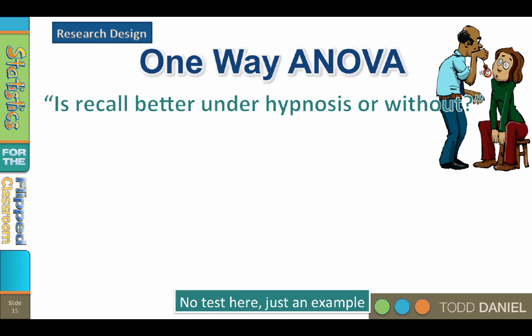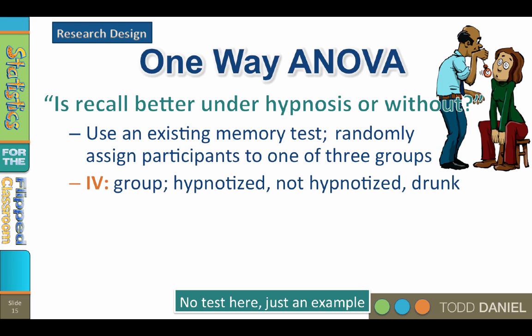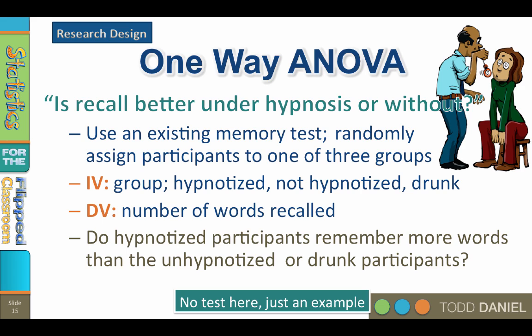How would the ANOVA work with our now familiar hypnosis example of hypothesis testing? Using the research question of whether recall is better under hypnosis or without, we would begin with an existing memory test, randomly select participants, and then randomly assign participants to one of three groups. The first group would be those who are hypnotized; the second group would not be hypnotized; and perhaps a third group who was drunk. The dependent variable for all three groups would be number of words recalled. In the end, we could answer the question: do hypnotized participants remember more words than the unhypnotized or the drunk participants? If the ANOVA was significant, then one of the groups was different from at least one other group, but we would need a post-hoc test to figure out which group differed from which other groups.